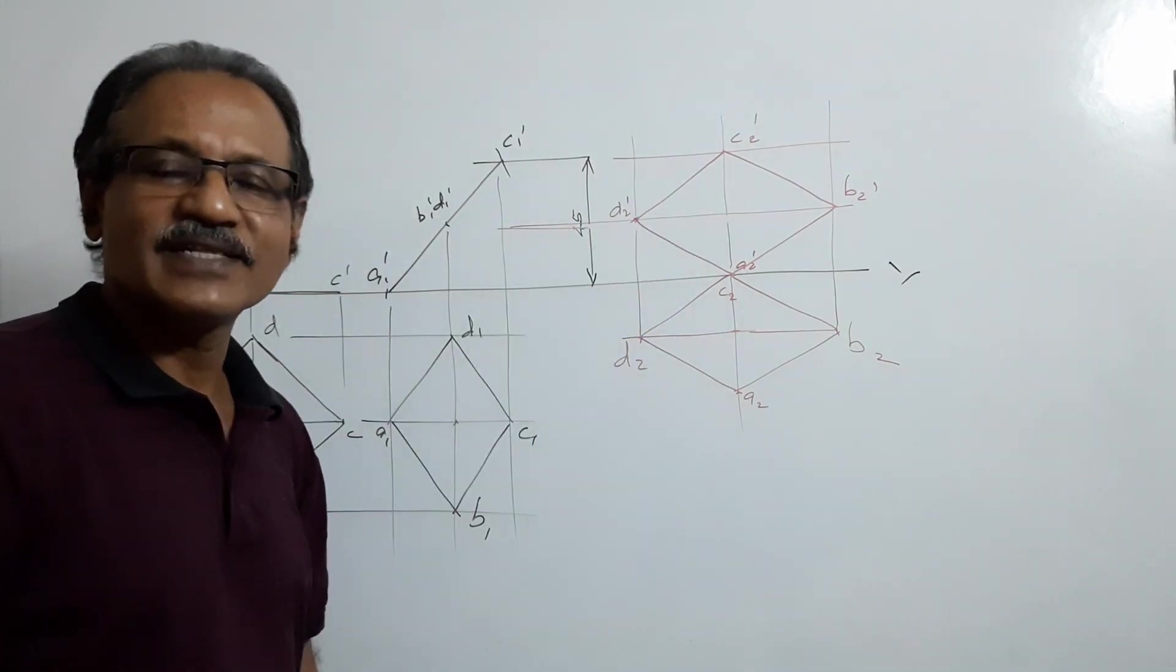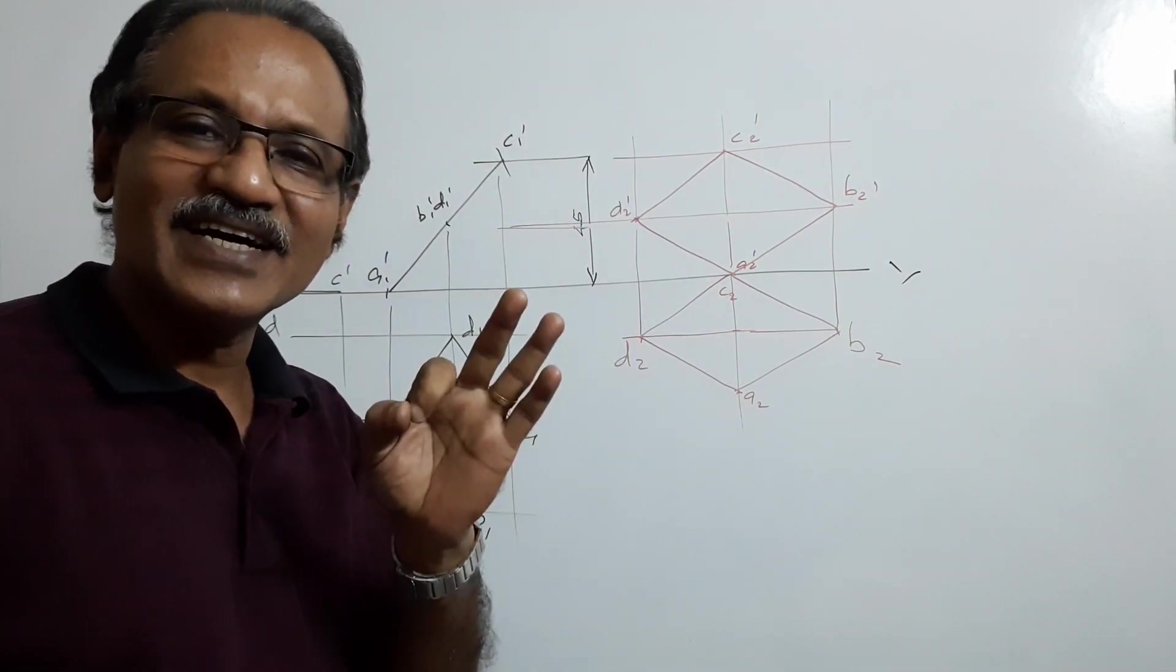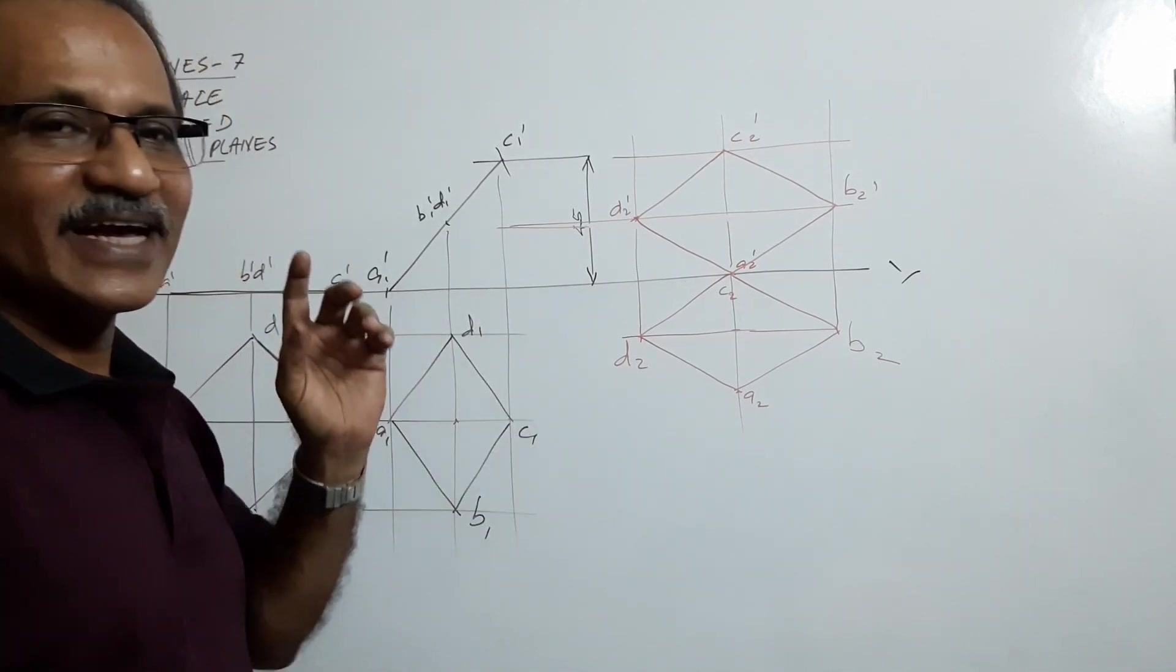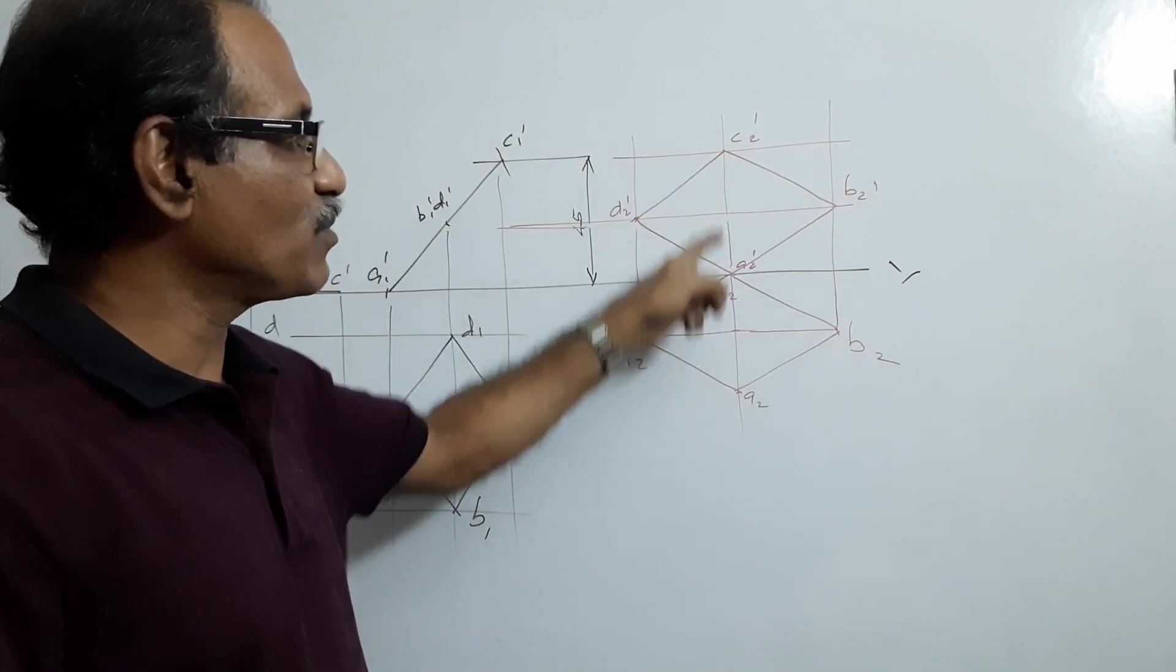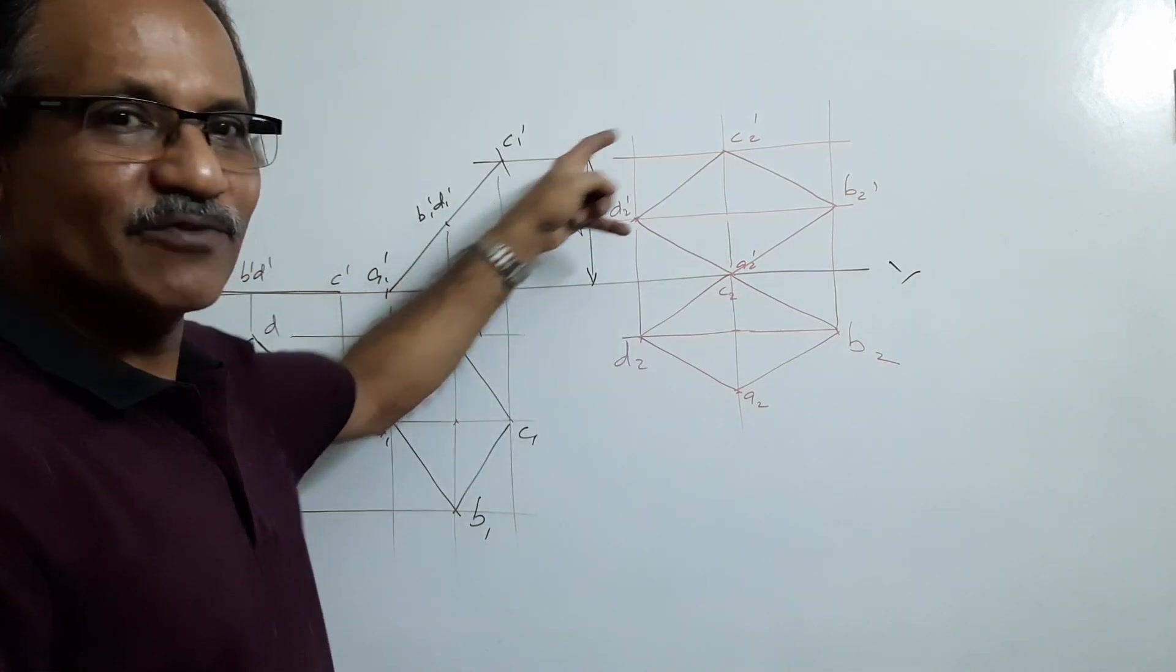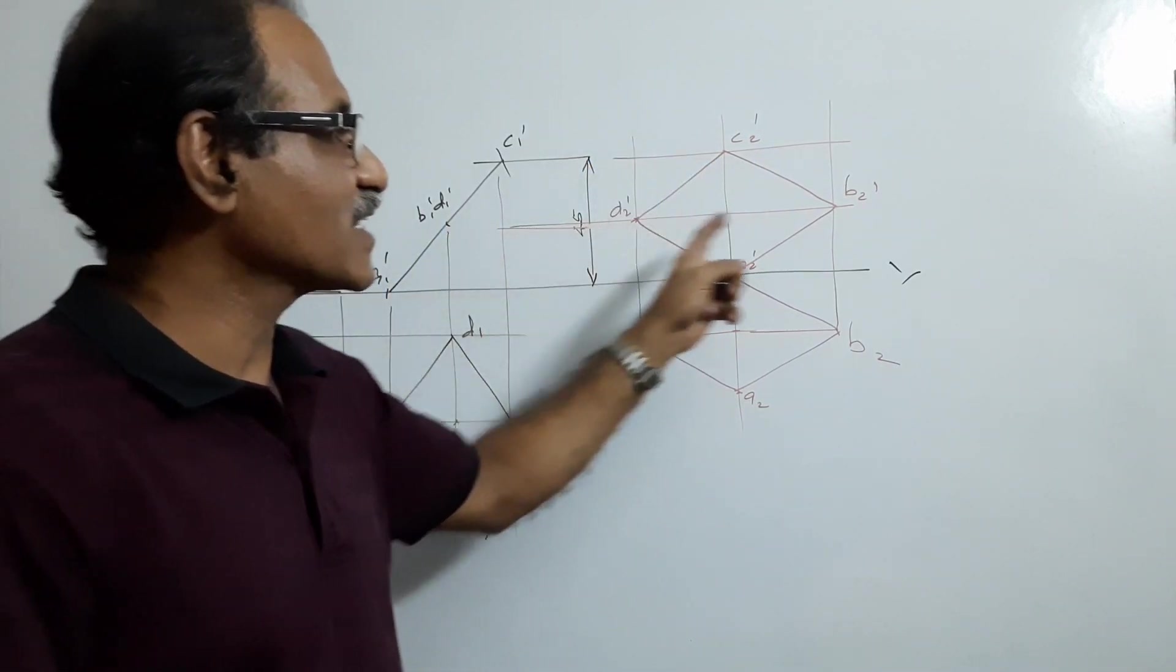What is the final elevation? The final elevation is the required one, a rhombus of 70mm and 45mm as diagonals with the larger diagonal horizontal.